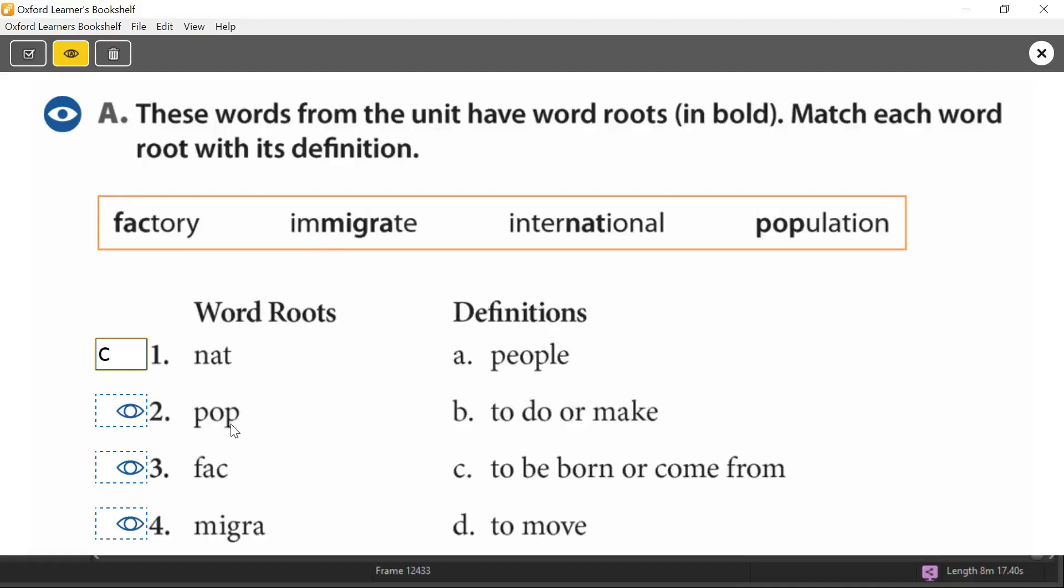P-O-P. Population. P-O-P. The definition is with here, A, people. So population is a group of people in a country or in a place or in a city. Population. P-O-P for people.